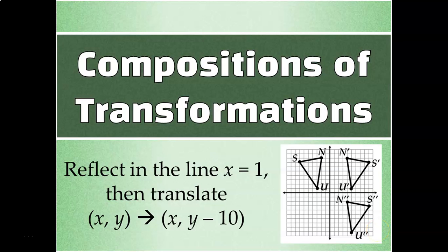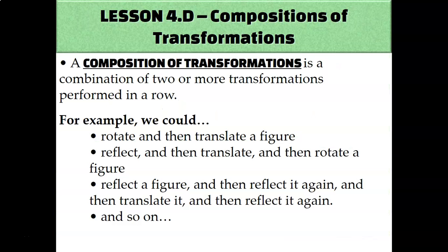Let's talk about compositions of transformations, which means performing more than one transformation on a figure. For example, we could rotate and then translate a figure. We could reflect it, and then translate it, and then rotate it. Or we could reflect it, and then reflect it, and then translate it, and then reflect it. You can perform as many transformations on a figure as you want to.